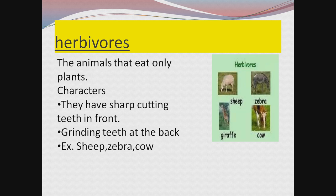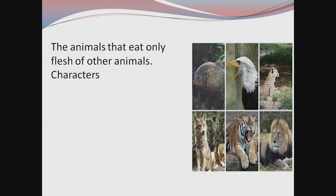First, herbivores. The animals that eat only plants are called as herbivores. Examples of herbivores are sheep, zebra, giraffe, and cow. What are the characteristics of herbivores? They have sharp cutting teeth in the front and grinding teeth at the back. As they eat hard plants, they cut with the front teeth and grind hard substances with the back teeth.